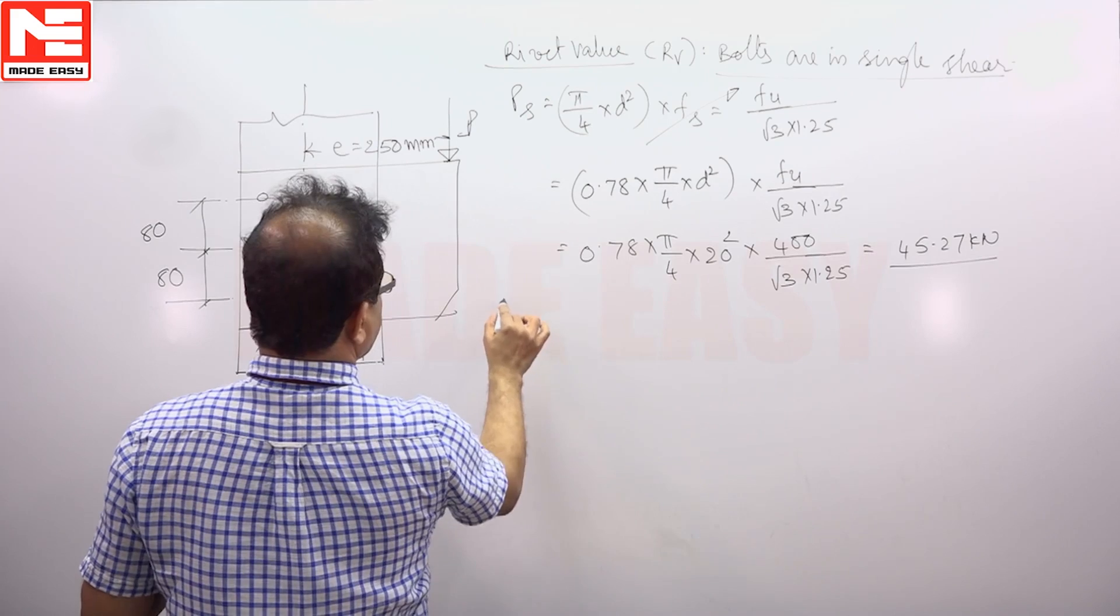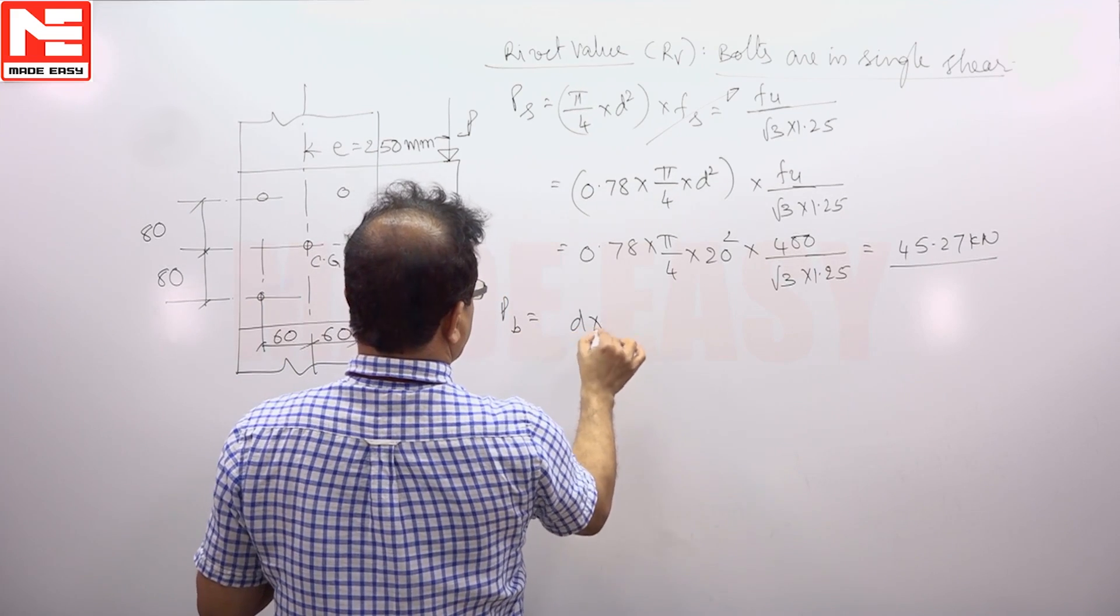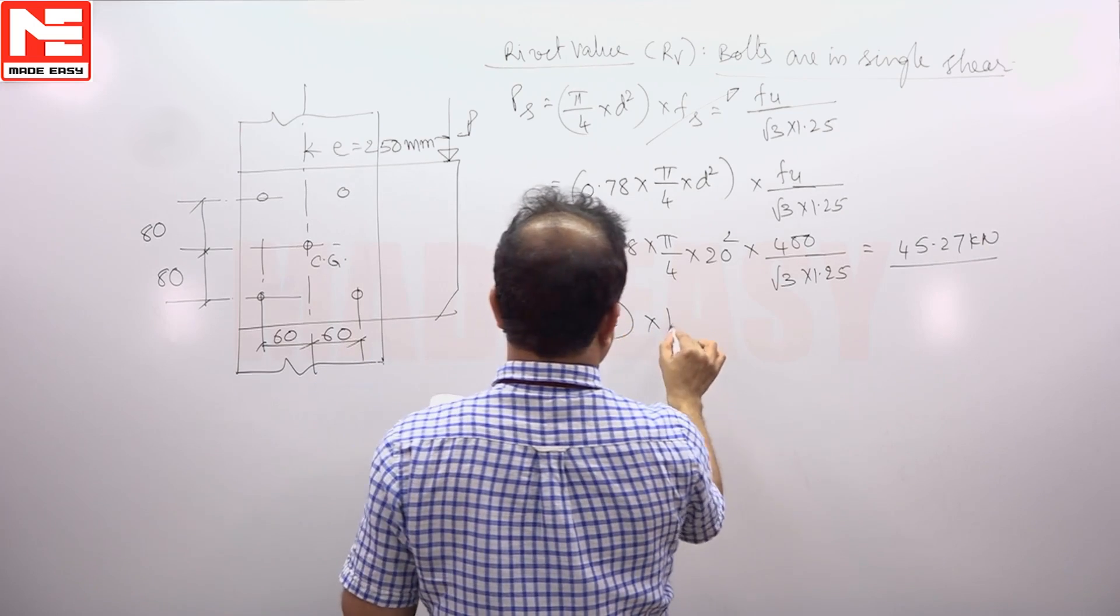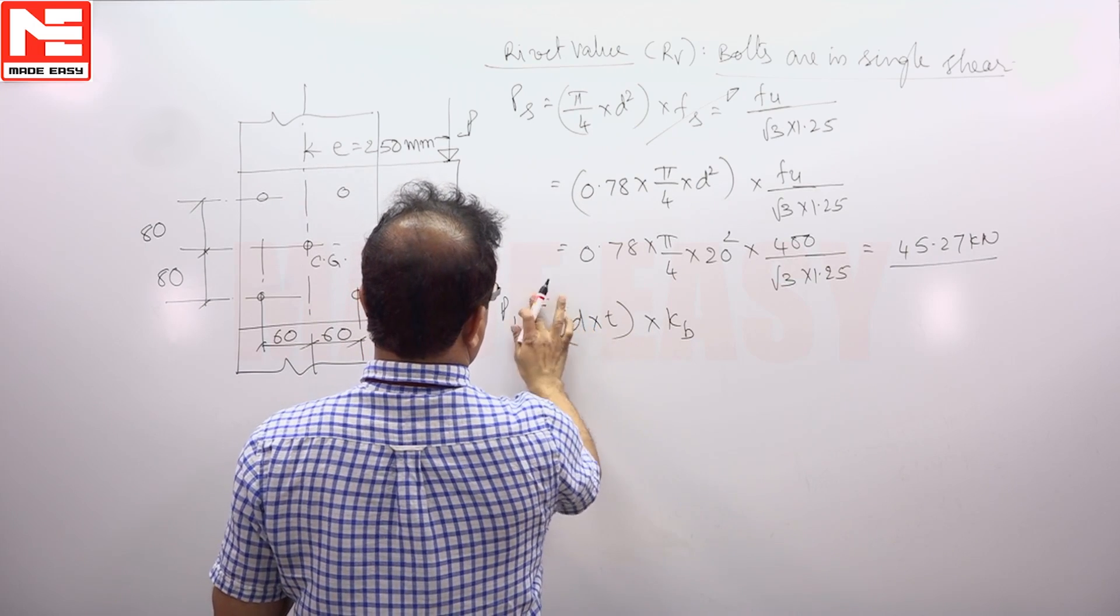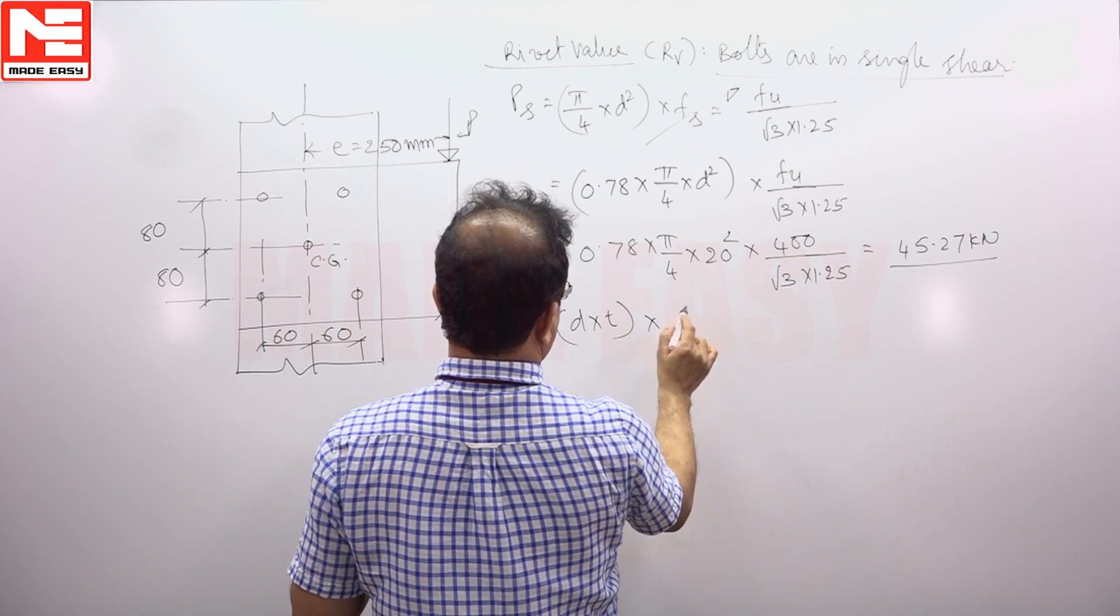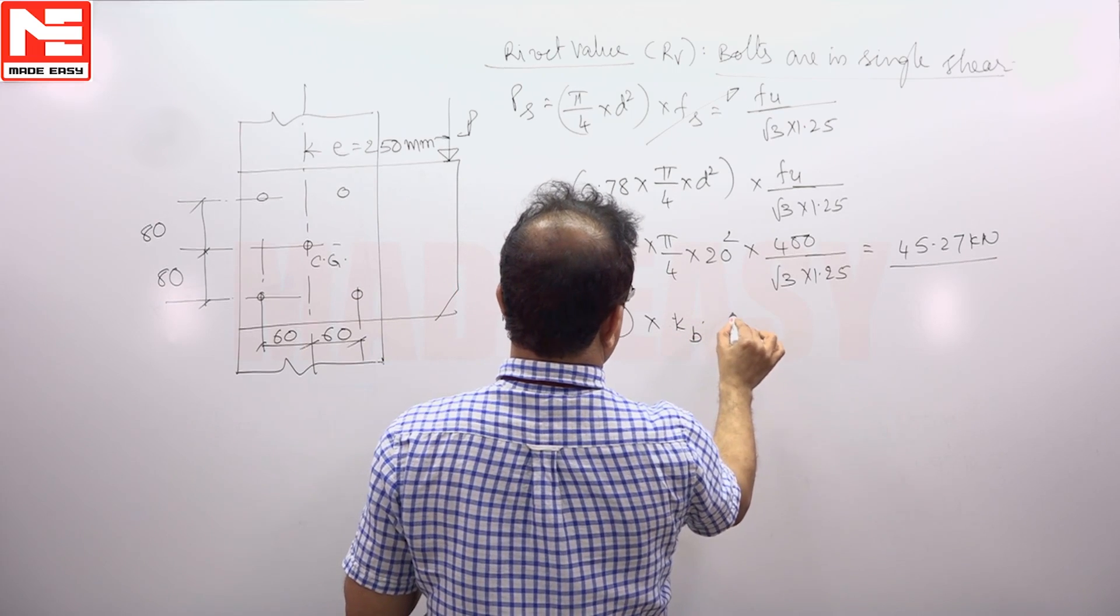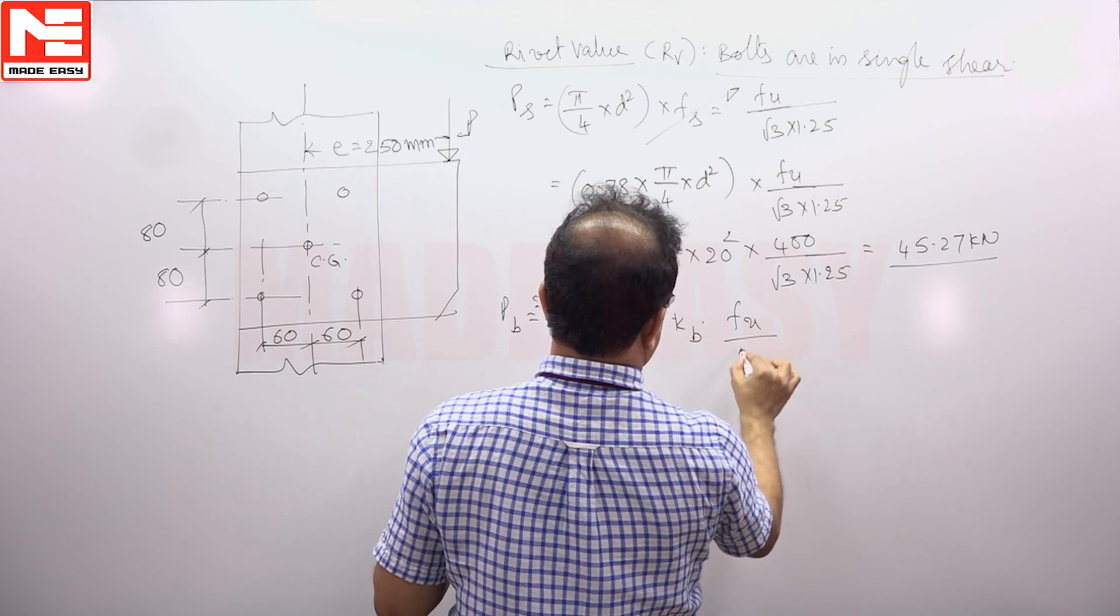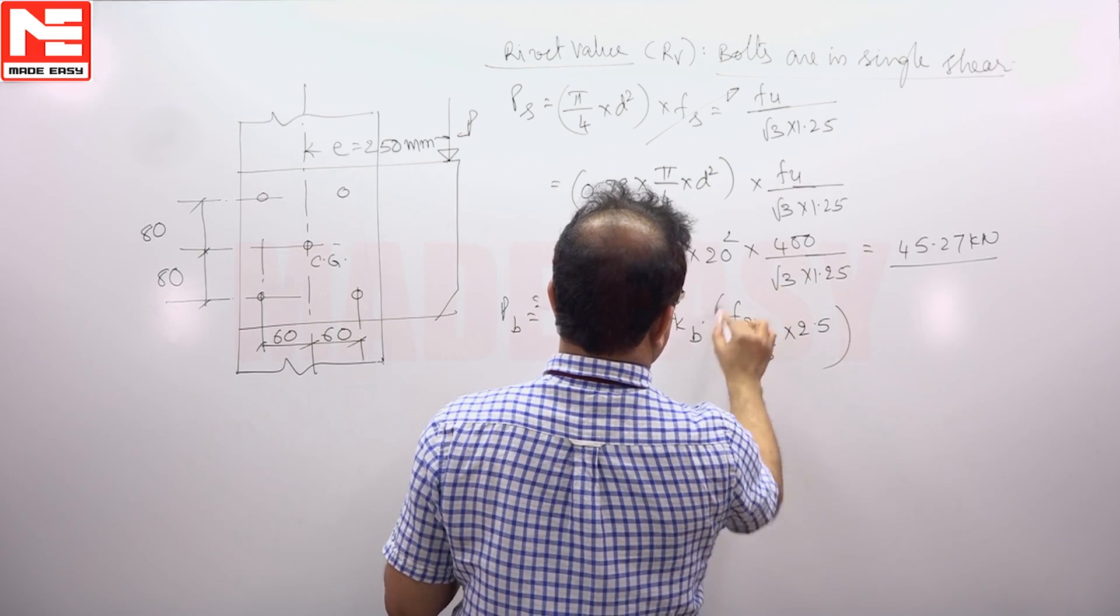Then Pb, design strength of bolt in bearing, is D × T × Kb × Fu/1.25 × 2.5.